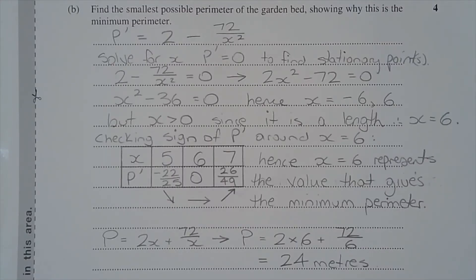Since the perimeter p can be expressed in terms of x, we can use the first derivative to find the value of x that gives the minimum perimeter. But first we need the first derivative dp/dx, or p dash.